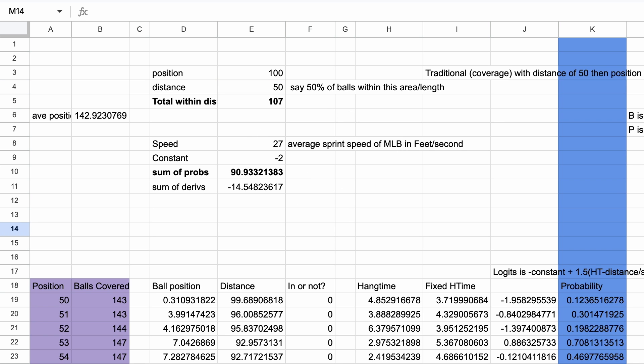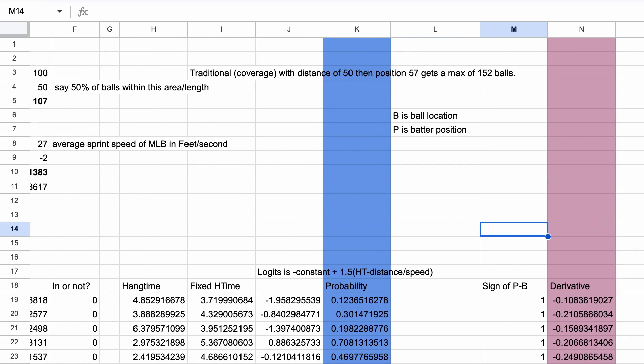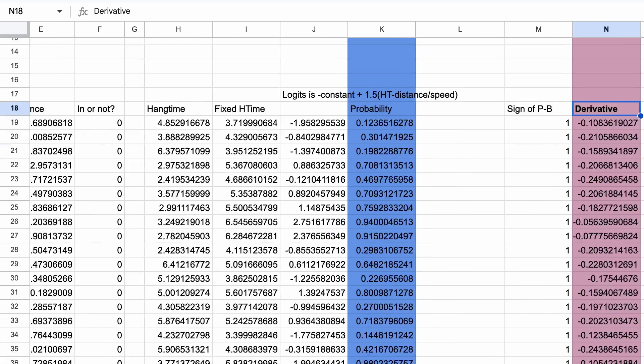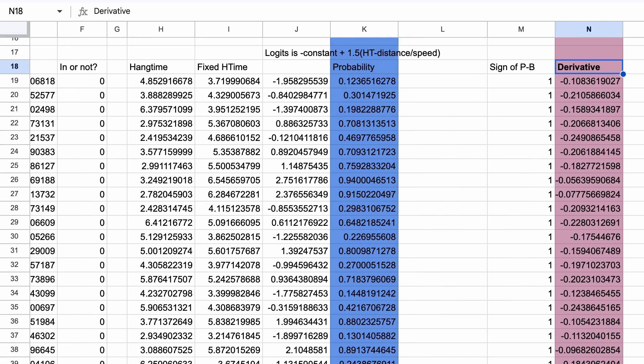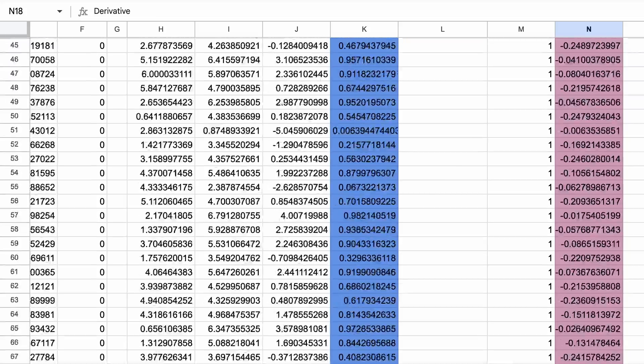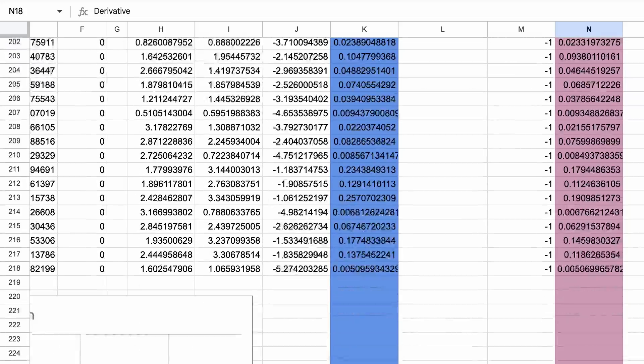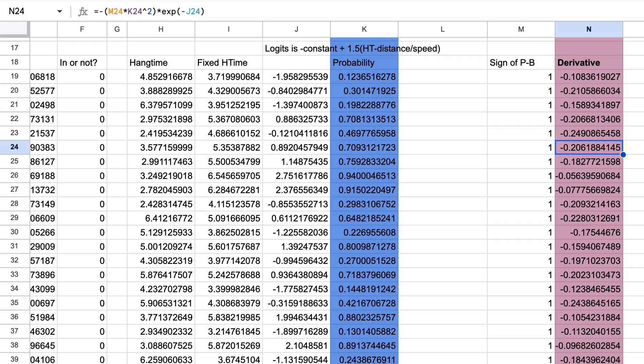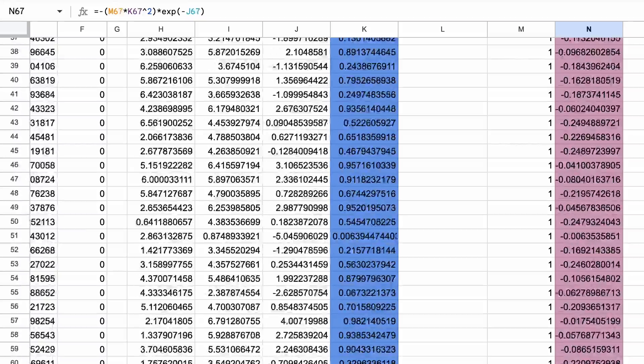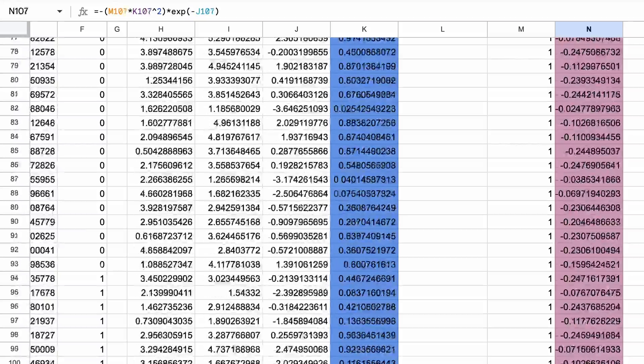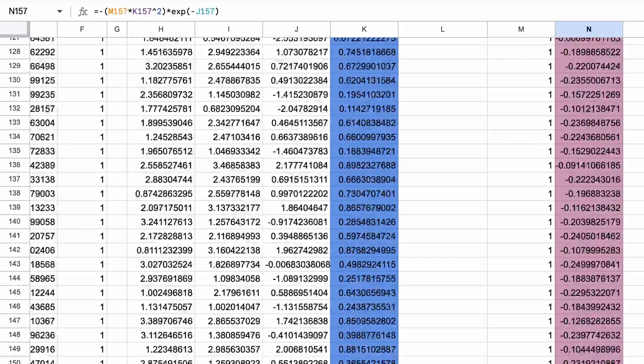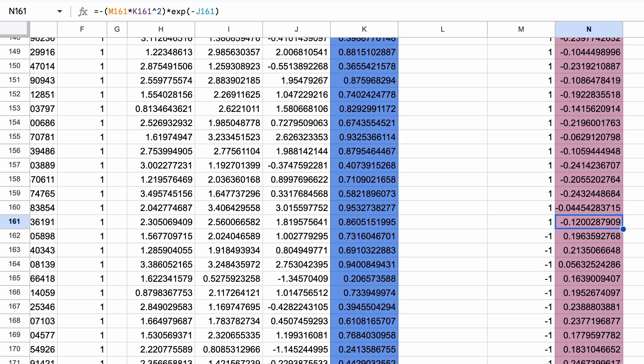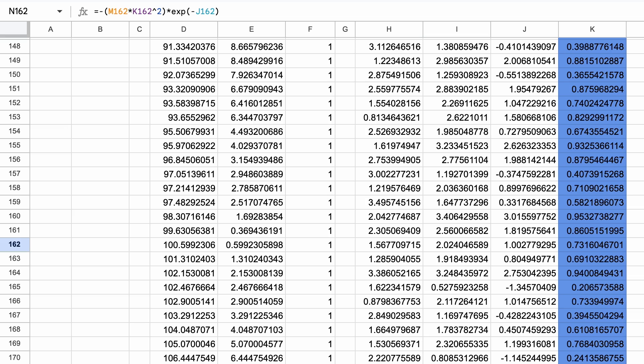We can see how it works with our data set if we take the derivative of our probability formula with respect to position. Then for each hit, we can calculate how much the probability will change with a small change in position. Notice these balls that are way to the left have negative values because if the fielder increases his position a little bit, which is moving to the right, then it will be harder for him to catch those balls, thus lowering the probability of catching those balls. These balls to the right have positive values because the fielder will be closer to those if he increases his position a little.